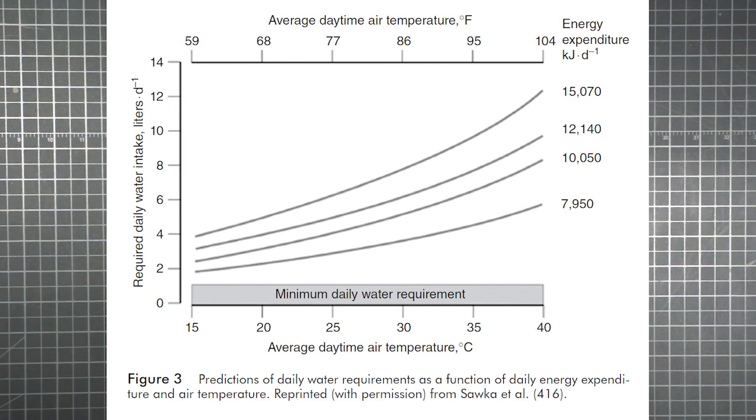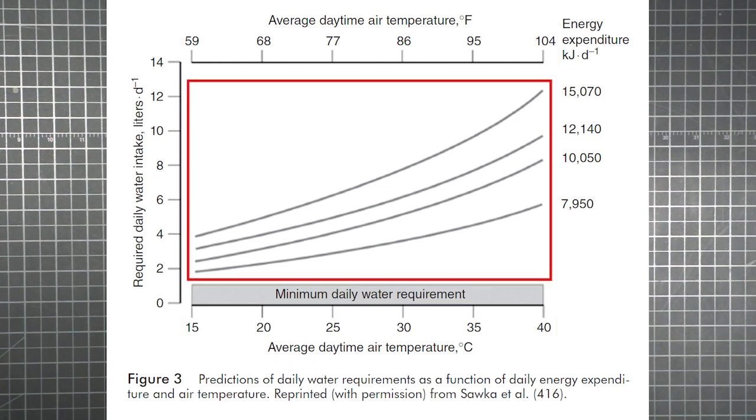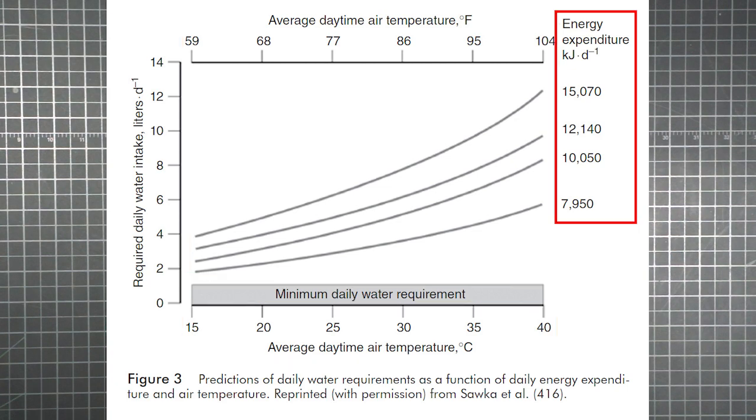The axes are temperature in the x direction and liters of water in the y. The temperature has scales for both Fahrenheit and Celsius. The four separate curves represent four different levels of energy expenditure, which in this case are shown in kilojoules. So here's the dietary calorie equivalents.